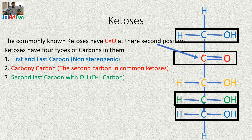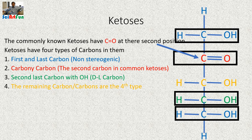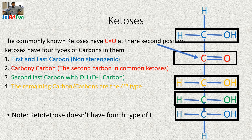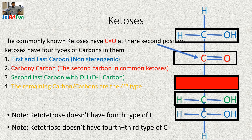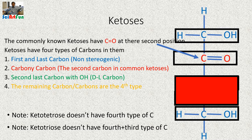The third kind of carbon is the second-last carbon, also called the penultimate carbon, which is involved in making the D and L sugars. If the hydroxyl group is on the right side, that sugar will be a D sugar; if it is on the left side, that will be an L sugar. This hydroxyl group will also not be part of our mnemonics. The fourth type of carbon consists of the remaining carbons. Ketotetroses don't have a fourth type of carbon, while ketotrioses lack both the third and fourth types.